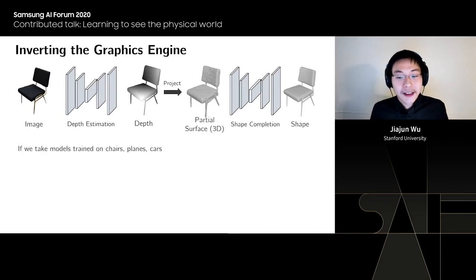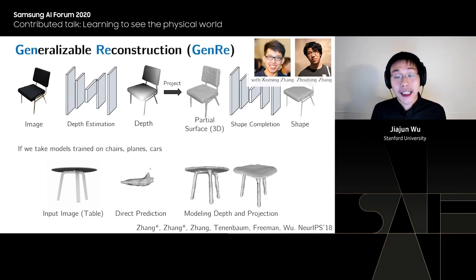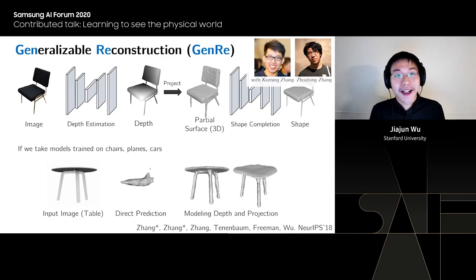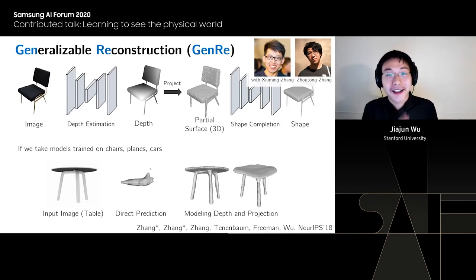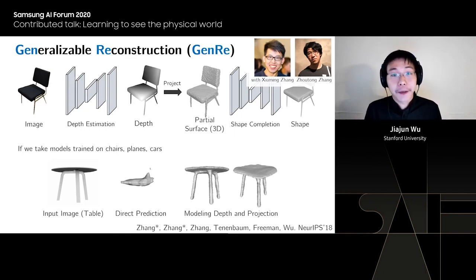With this simple change, when we test on a table — a class the model was never trained on — the result now looks much more like a table compared to direct prediction. This is our model called Generalizable Reconstruction, published at NeurIPS about one and a half years ago, in collaboration with Shouming and Zheochong, PhD students at MIT.